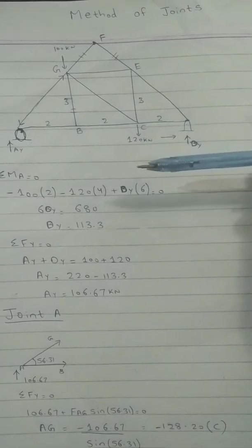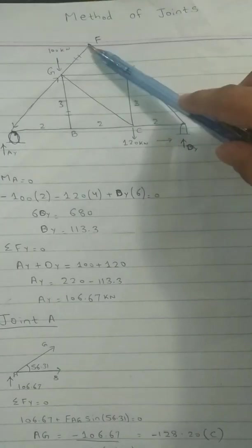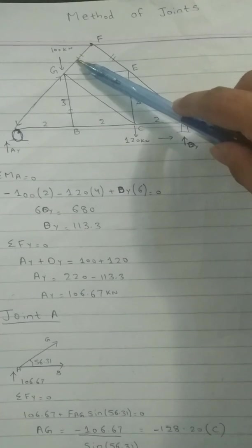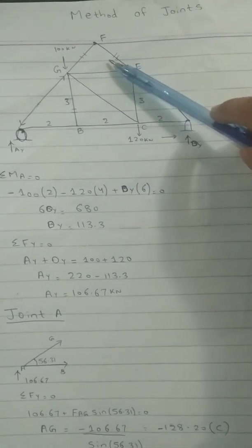If you will stand at this joint F, you can realize there are no external forces acting and force inside these two members will be zero, and we will mark these as zero force members initially.